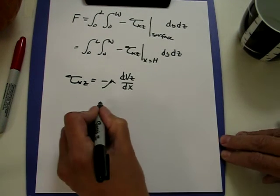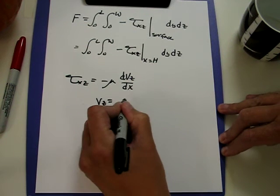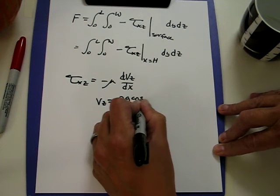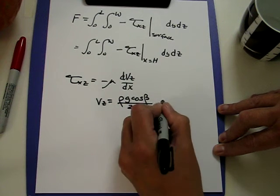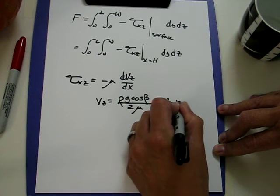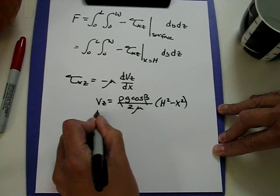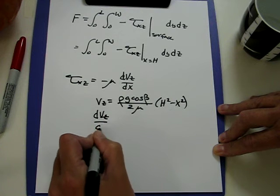It's equal to vz equals rho g cos beta over 2 mu times h squared minus x squared. We can now take the derivative dvz dx.